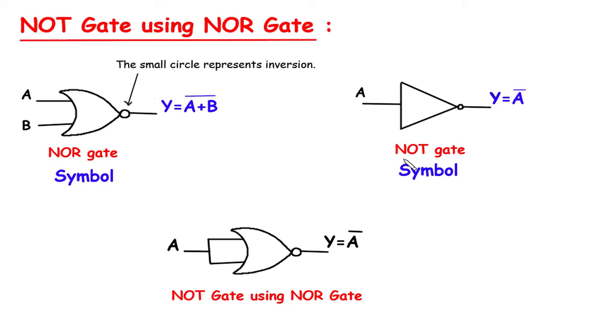This is the symbol for NOT gate. It has one input and one output. The output is the complement of input.